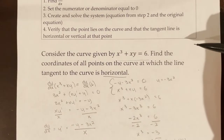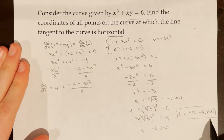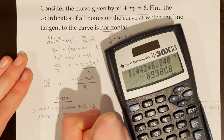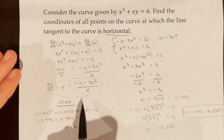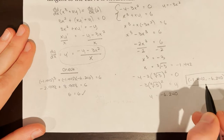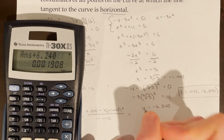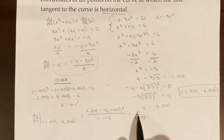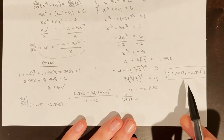The last step is to verify that the point lies on the curve and that the tangent line is horizontal. I plug in the x and y values into the original equation to confirm. Then I evaluate dy/dx at this point — the numerator comes out to approximately 0.001908, which I attribute to rounding error, making it essentially 0 over negative 1.442. This matches the criteria for a horizontal tangent line: 0 over a number.